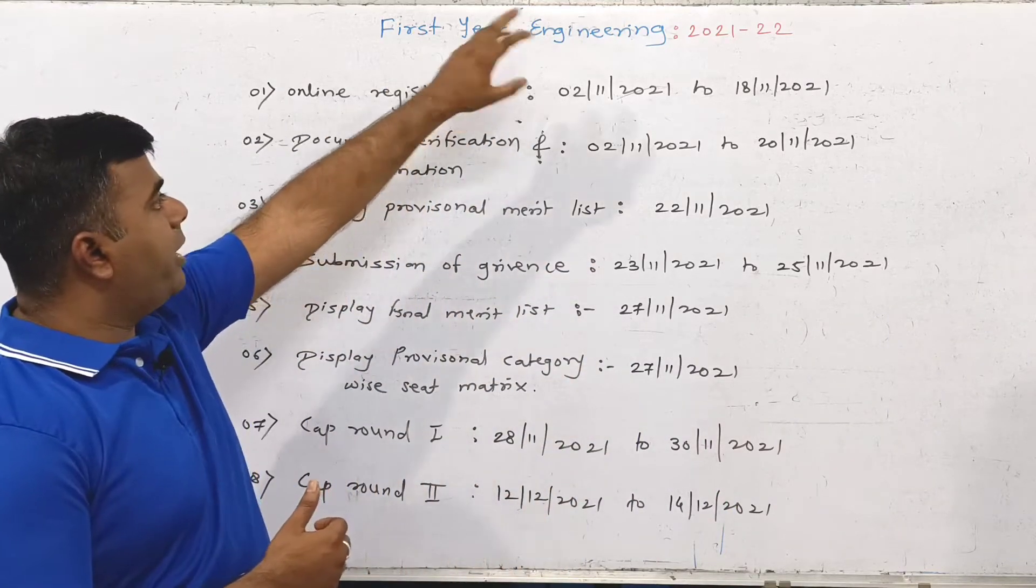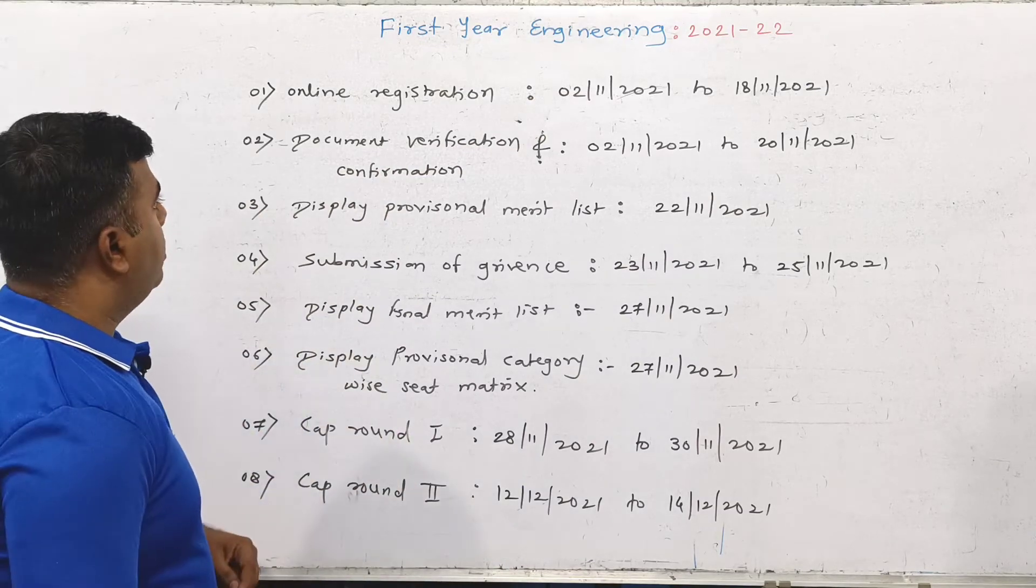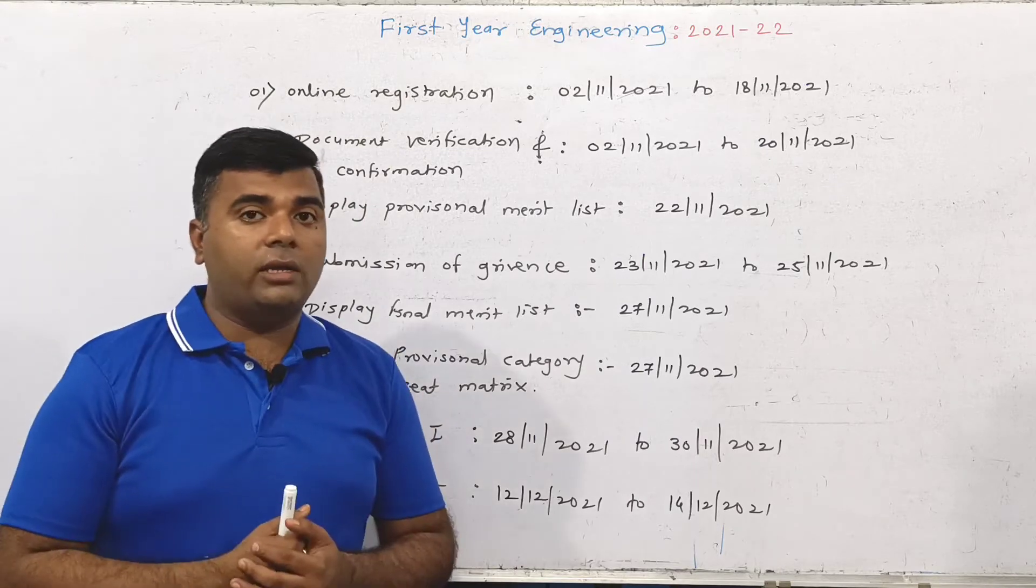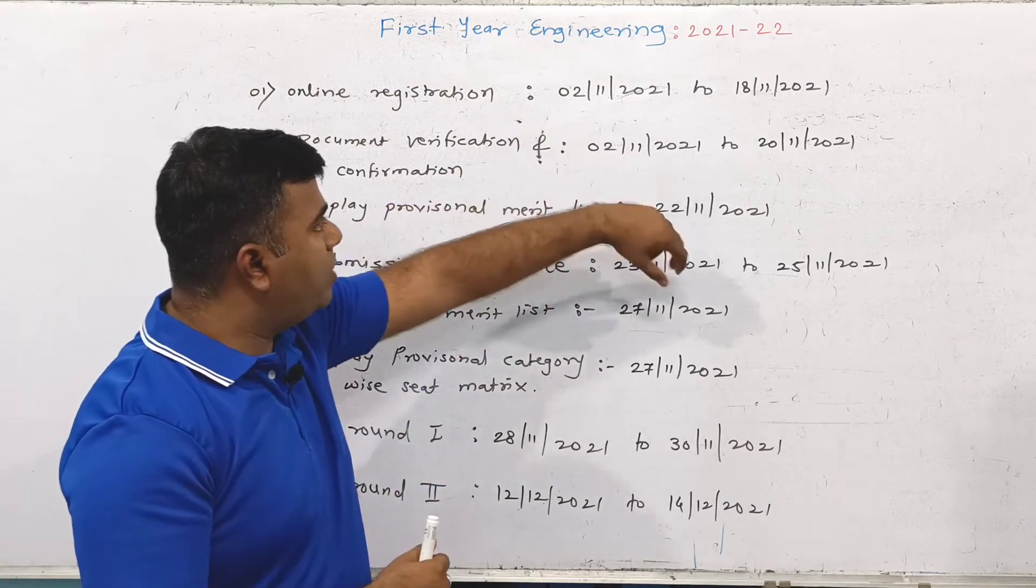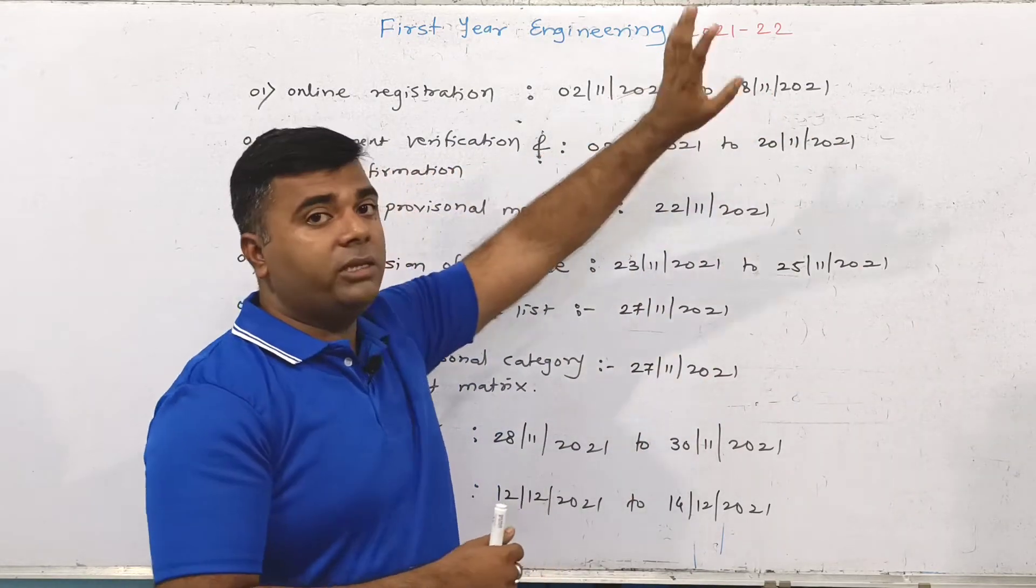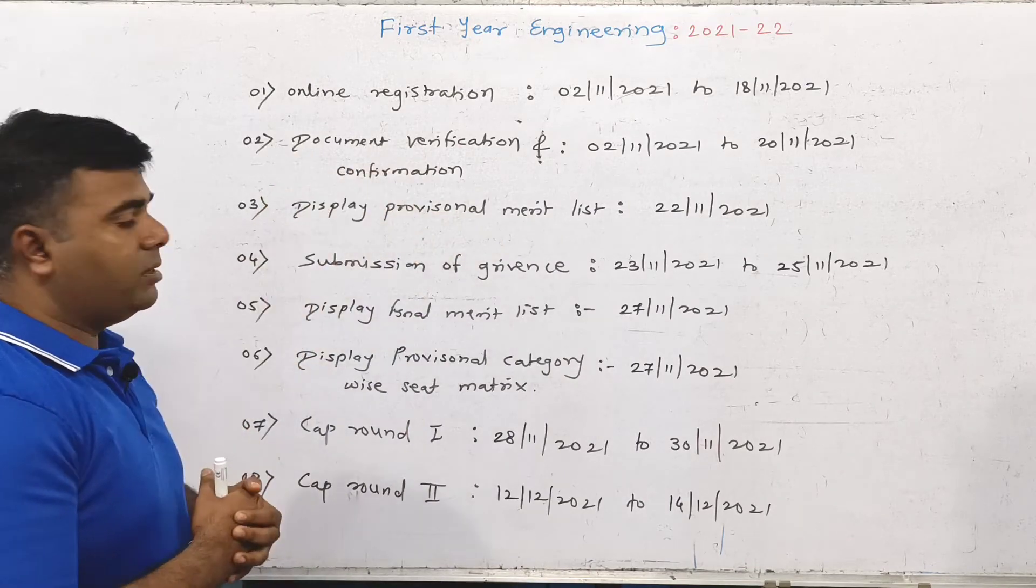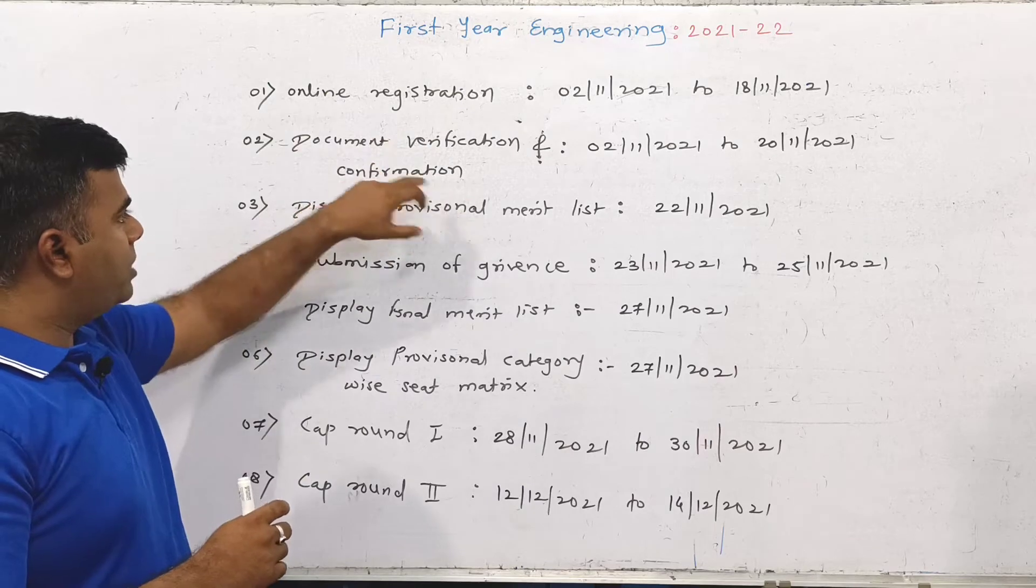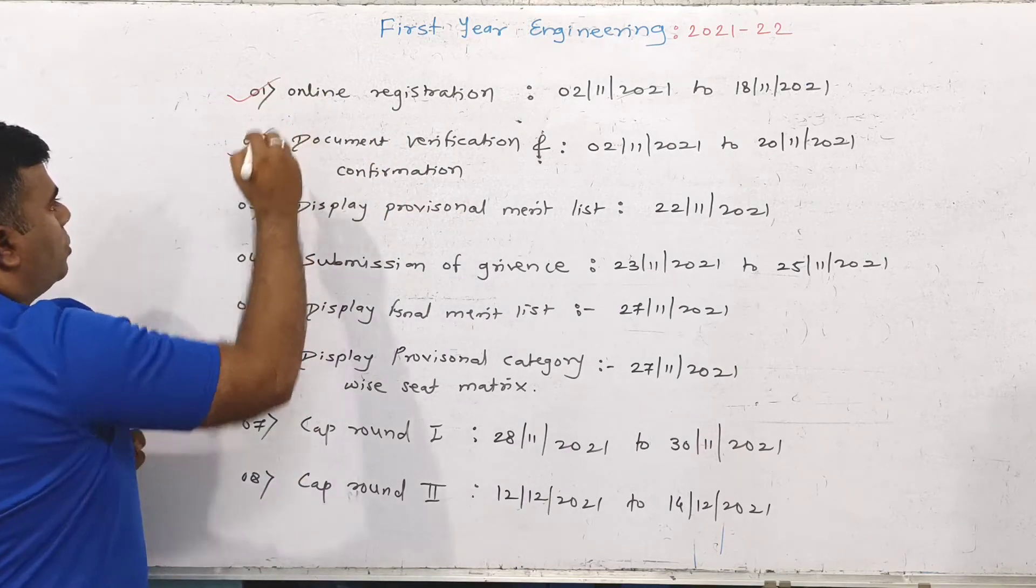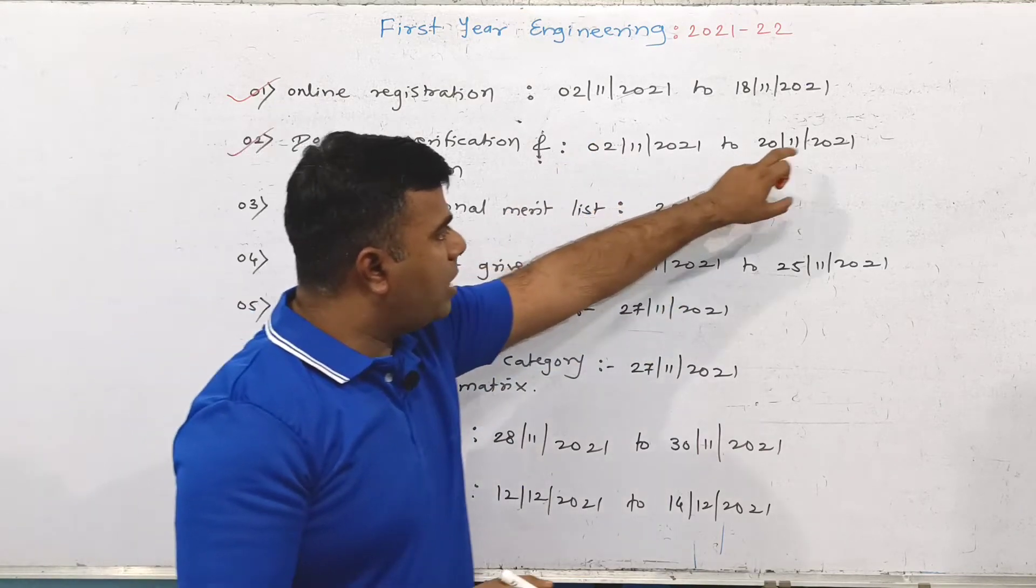First Year Engineering Admission 2021-22. Online registration is from 2nd November 2021 to 18th November 2021. The span for registration and document verification/confirmation is from 2nd November 2021 to 28th November 2021.